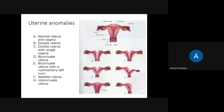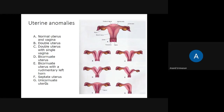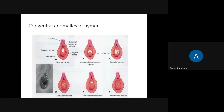If the cervix is united, it leads to what is called a bicornuate uterus. If one of the paramesonephric ducts is not developed, it is called a rudimentary horn — only one part of the uterus is developed. If the septum between the two paramesonephric ducts remains, it is called a septate uterus. If only one paramesonephric duct develops, it is called a unicornuate uterus.